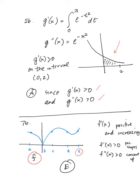In number 26, G prime is the integral from 0 to x of e to the negative t squared dt. G double prime is therefore e to the negative x squared. The area underneath that curve is always positive from 0 to 2, and G double prime equals e to the negative x squared, which is also always positive. Since both are positive, G is increasing and the graph of G is concave up. In number 76, we're given a graph of F and looking for where F prime is positive and increasing — meaning where slopes are positive and concavity is up. That happens at point E, so our choice is E.